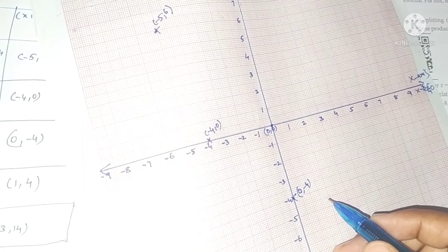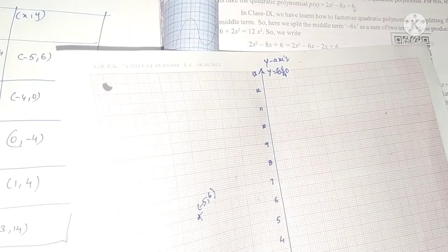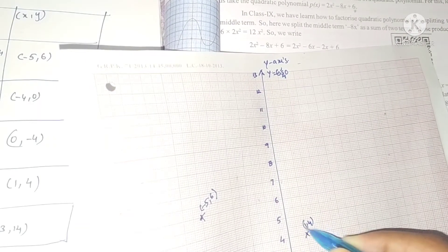Next one is 1 comma... wait, when x is 1, y is 0, not 4. Let me correct this.